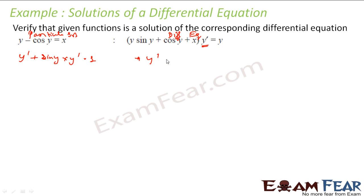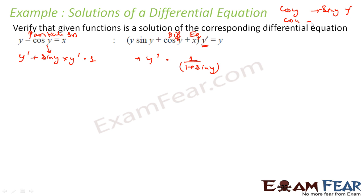So I get y dash = 1 / (1 + sin y). Please note: when you differentiate cos y that becomes −sin y × y dash, but when you differentiate cos x that becomes sin x — there is no chain rule component. This is from differentiation, I just want to confirm so you do not get confused. So I got y dash = 1 / (1 + sin y).